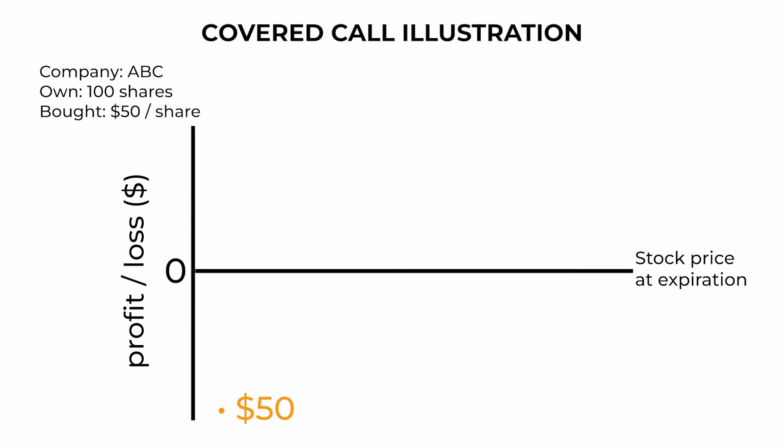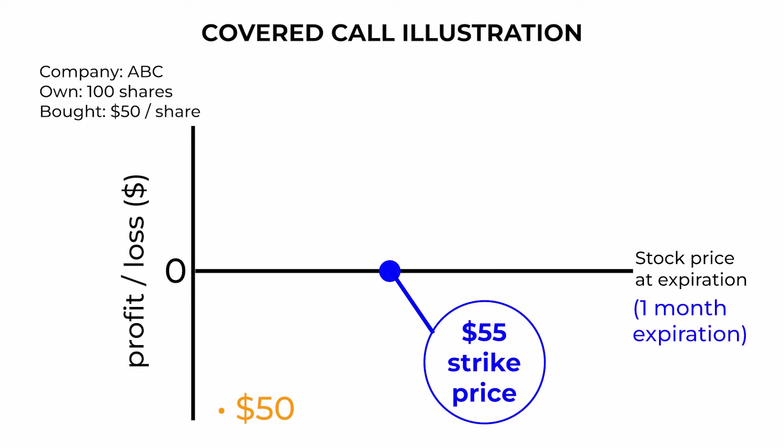To illustrate a covered call, imagine you own 100 shares of ABC company currently trading at $50 per share. You are neutral to slightly bullish on the stock's short-term prospects but don't expect it to rise dramatically. So you decide to implement a covered call strategy and sell one call option contract for ABC with a strike price of $55 and an expiration date one month away.